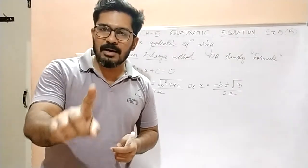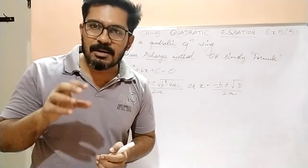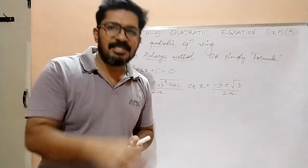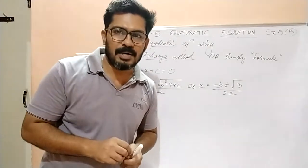We have already learned one method to solve the quadratic equations. What is it? The middle term split method. Now this is the second method which is simply called as formula. Now what is the formula?